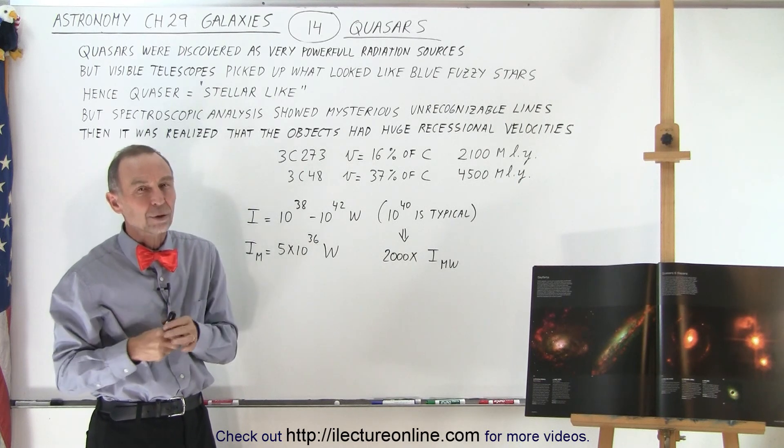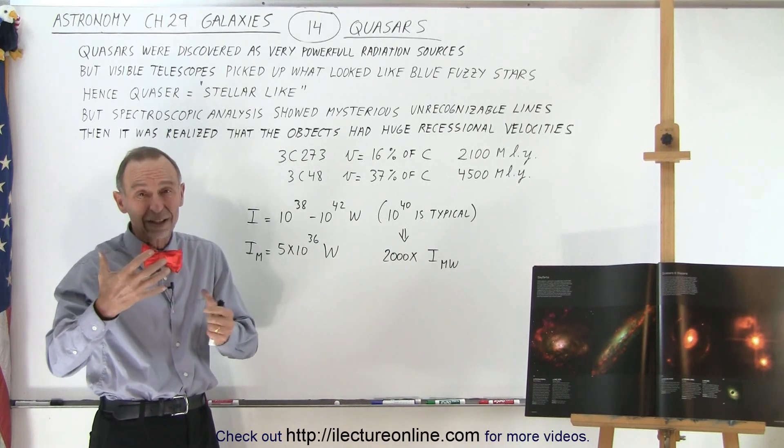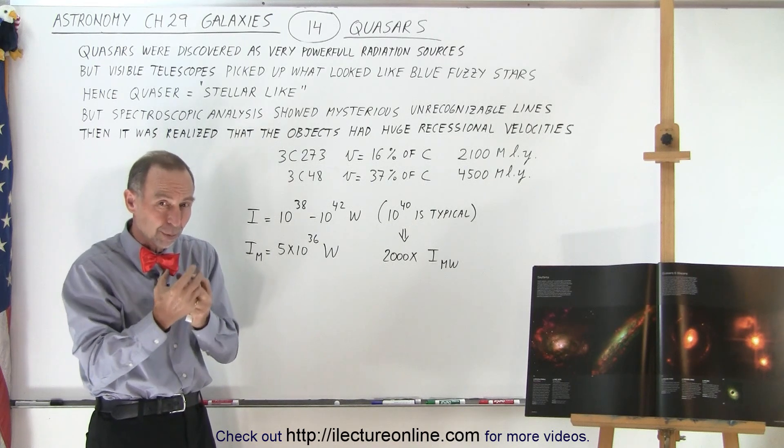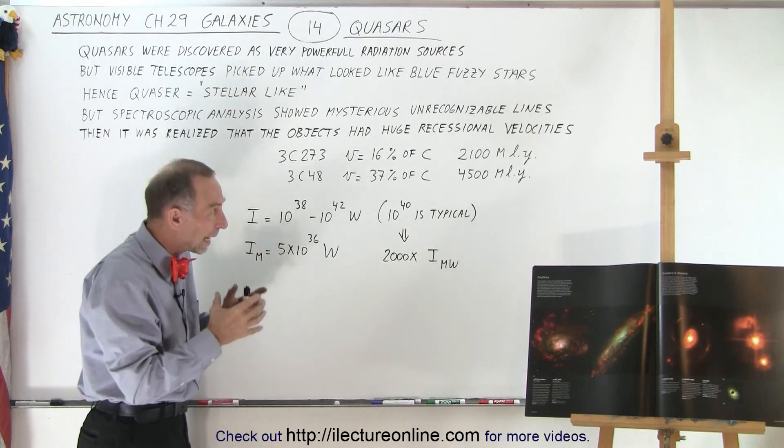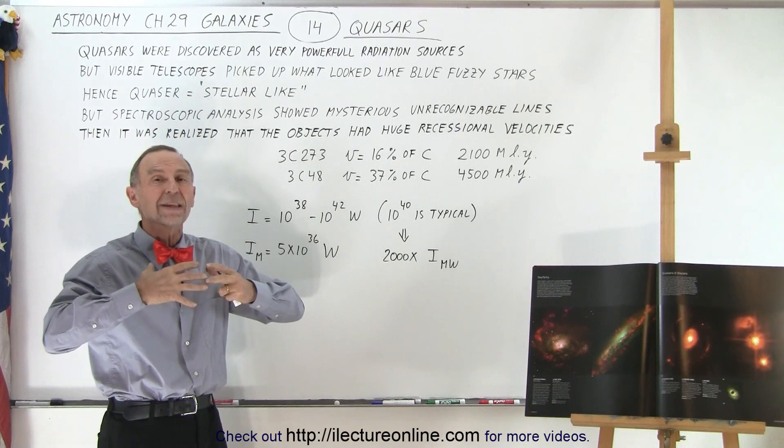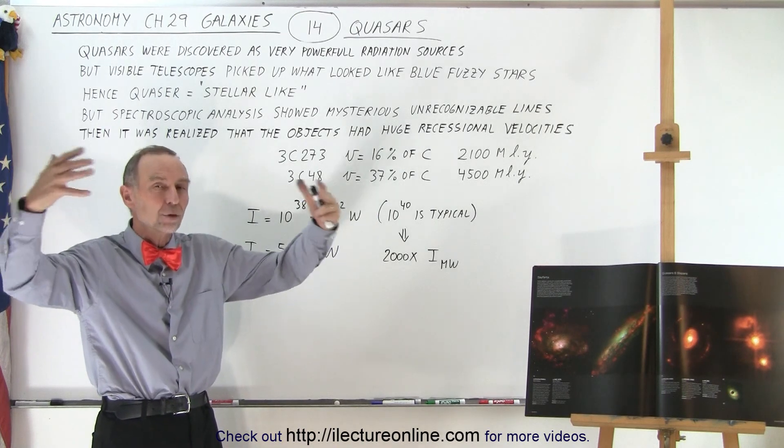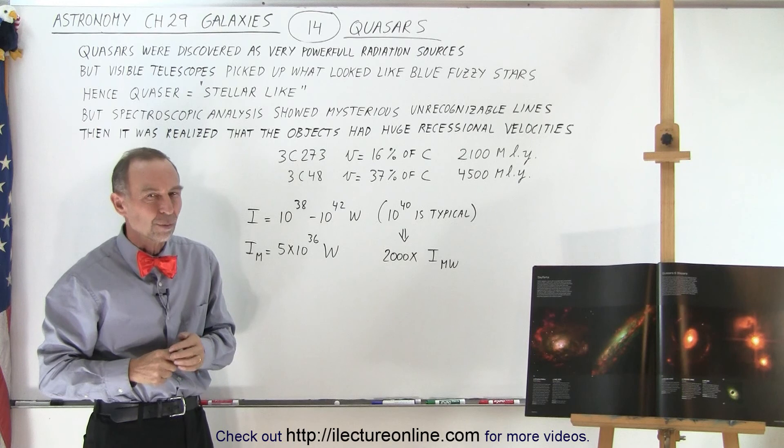They began to realize that quasars were galaxies that were extremely active, that had very active supermassive black holes at the center. They began to realize that those were things that were primarily happening in the past, and that currently, there's not a lot of quasars around.